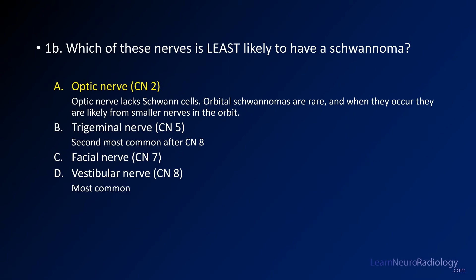For the second question — which of these nerves is least likely to have a schwannoma — the answer is the optic nerve, because it does not have Schwann cells. The optic nerve is myelinated by oligodendrocytes, as is the rest of the CNS. The other cranial nerves do have Schwann cells. The most common site for schwannoma is the vestibular nerve, which is why we no longer call these acoustic neuromas. You can also get schwannomas of the trigeminal and facial nerves.